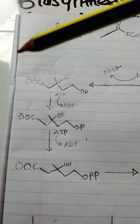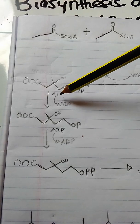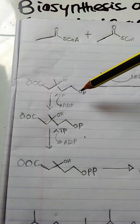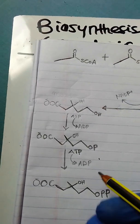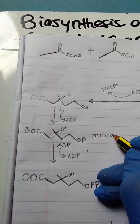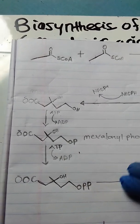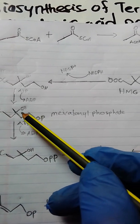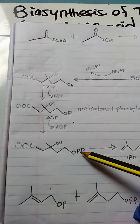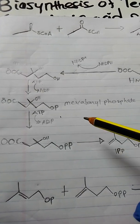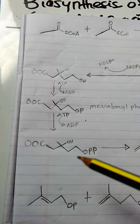Now the mevalonic acid will undergo pyrophosphorylation, as we said earlier, through phosphate groups. The first phosphate will come from ATP and the hydroxyl is going to be phosphorylated. The first phosphorylation will result in mevalonic phosphate. Then the second phosphorylation of the mevalonic phosphate will result in mevalonic pyrophosphate. Two phosphate groups are called pyrophosphate or diphosphate.